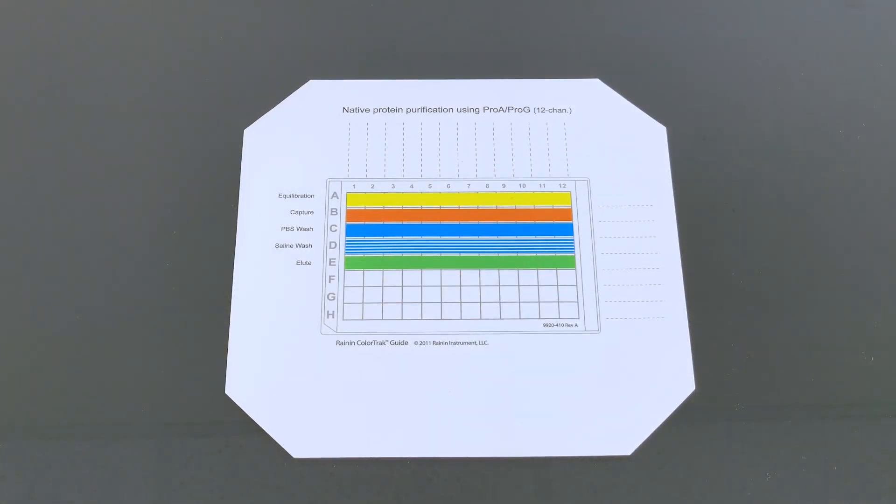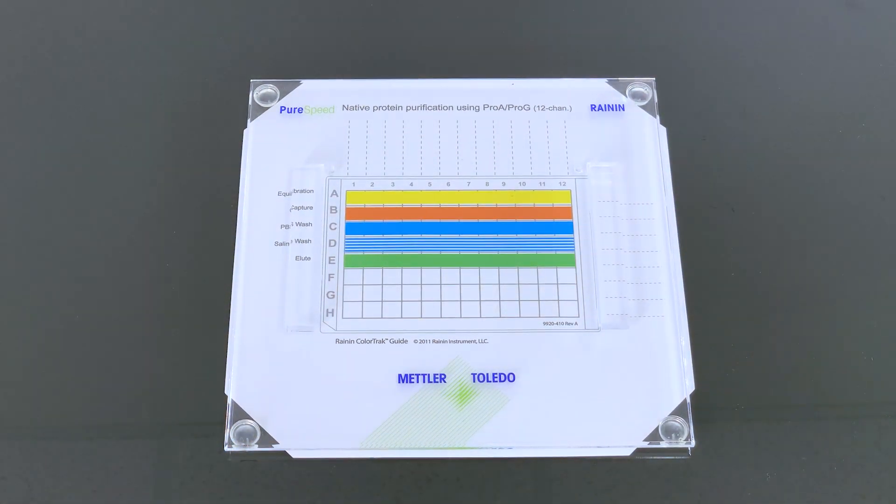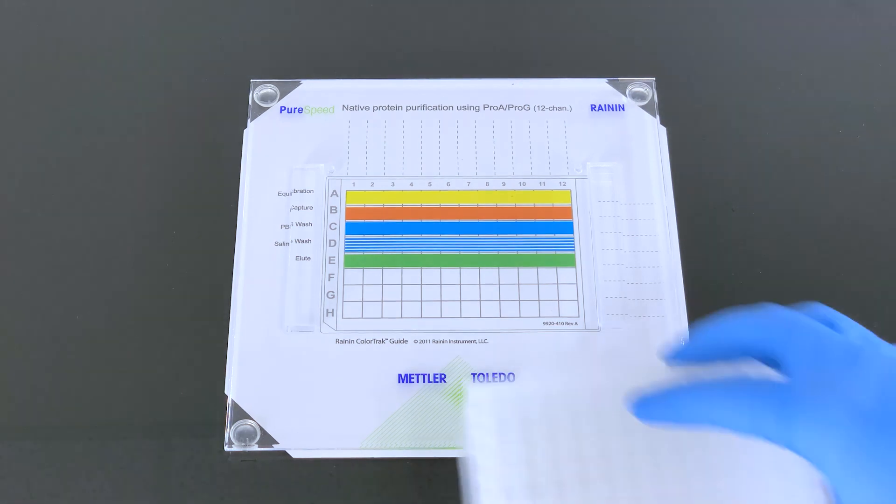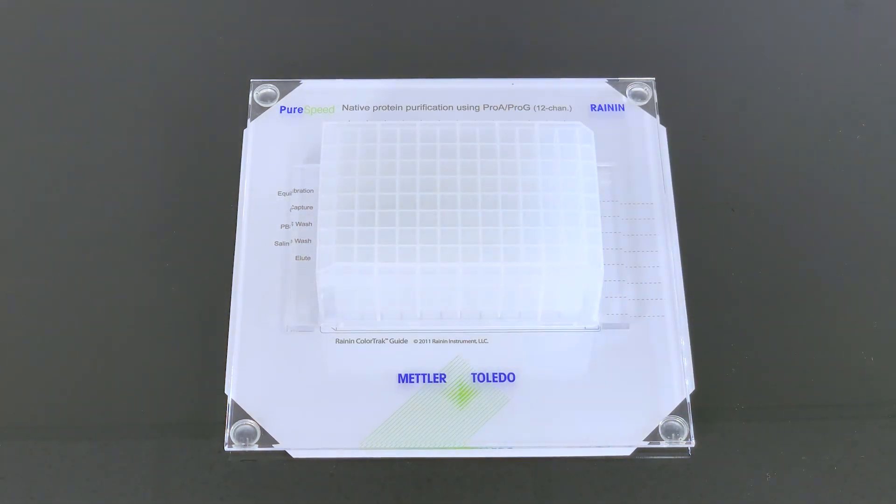Start assembling the base by placing the ColorTrack guide as a template on your table. Then place the platform base on top of the guide. Slide the 96-well deep well plate into position on top of the guide along the rails.